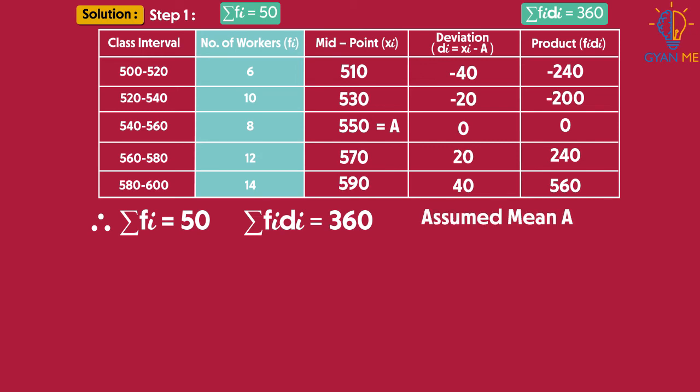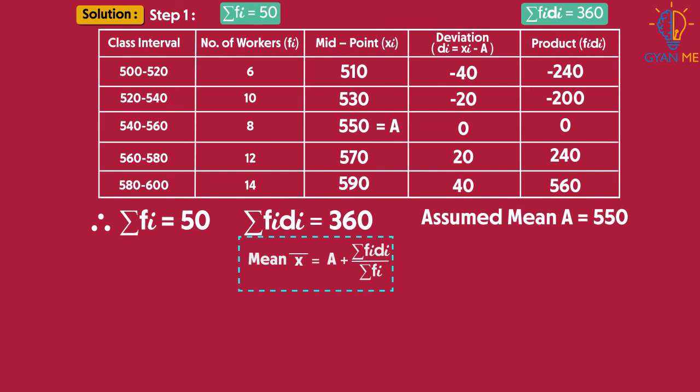So now let us use the formula and find mean x-bar for the given data by assumed mean method. Therefore, x-bar equals A plus sigma fi di divided by sigma fi. On substituting the values, we get 550 plus 360 divided by 50. And on solving, we get the value of mean as 557.2.